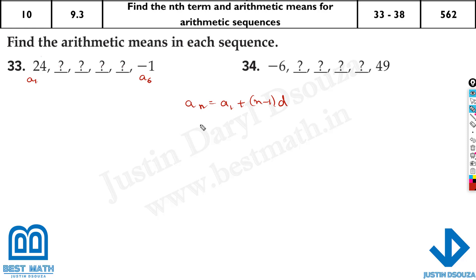So I know this is a_6. Let me substitute here. a_6 will be equal to a_1, that's 24, plus what is n? Sixth term. Minus 1 times d. We don't know the d value. Once we know the d value, we can easily find the remaining sequences because you just have to add the d value here.